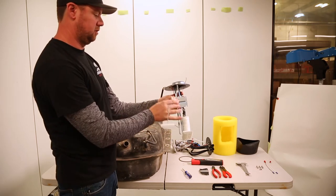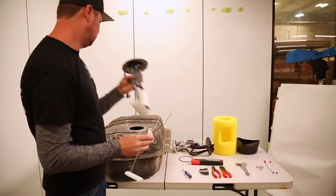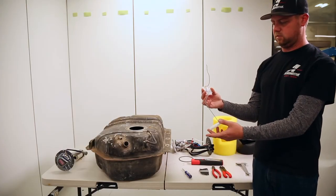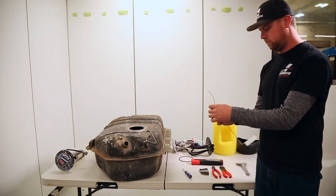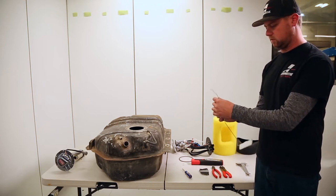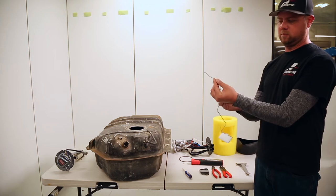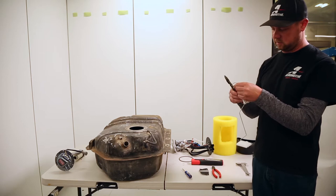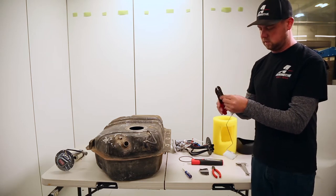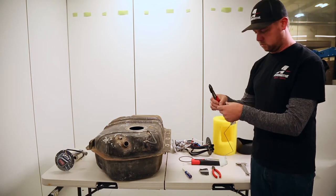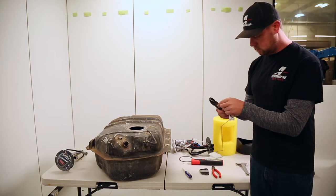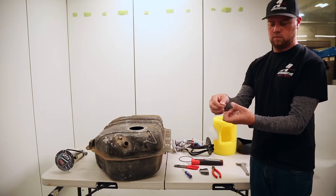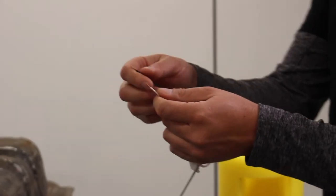Once we have this removed from the sending unit, we're done with this. Now we need to strip a portion of this wire off so we can reattach it to our pigtail wires. Go ahead and strip just a small portion off the wire, about that much. That's all we need.